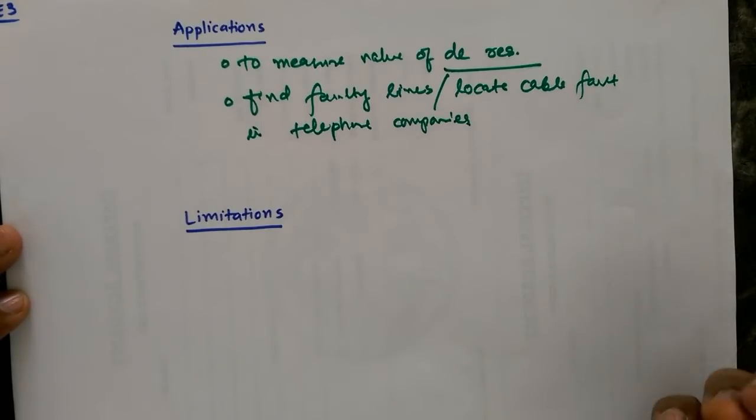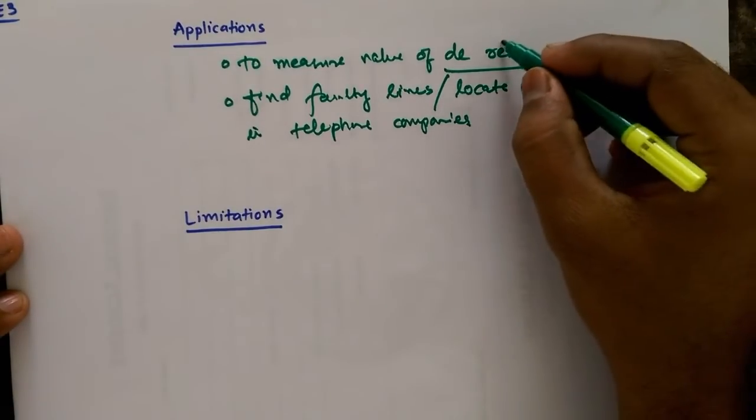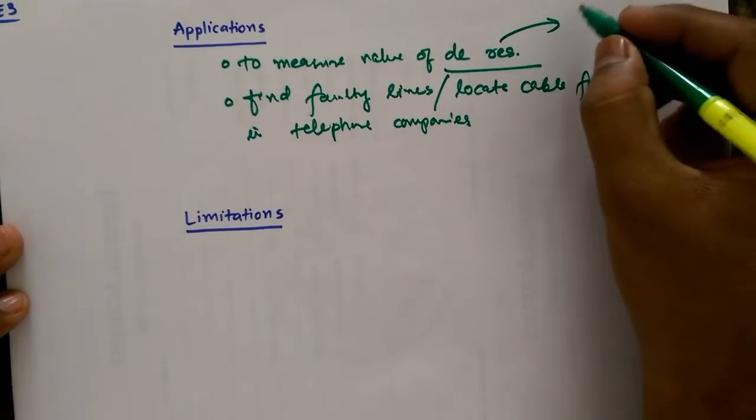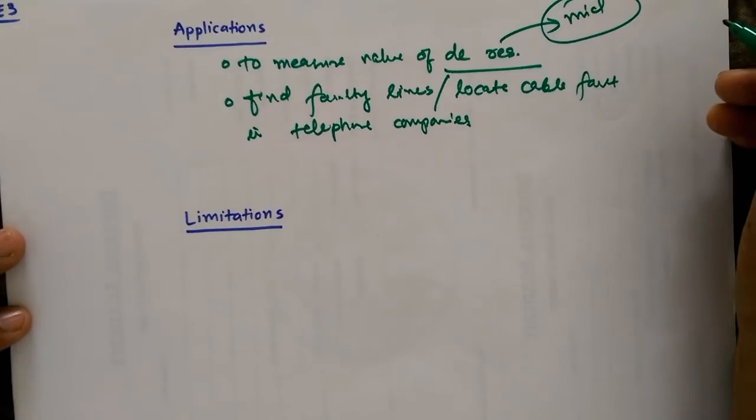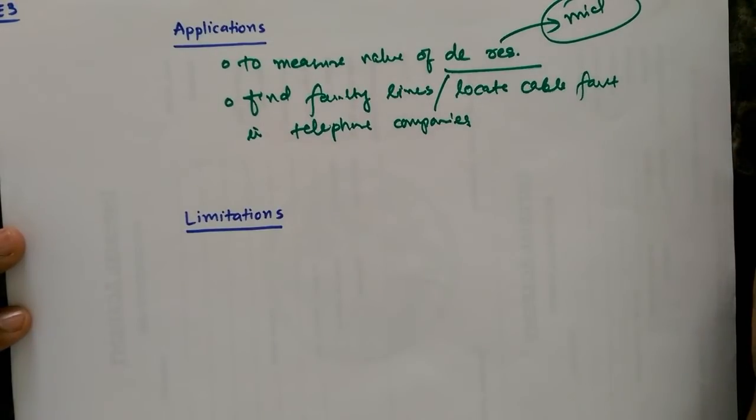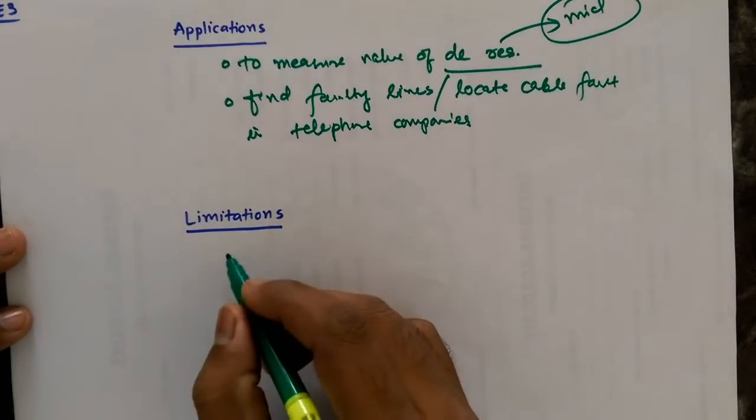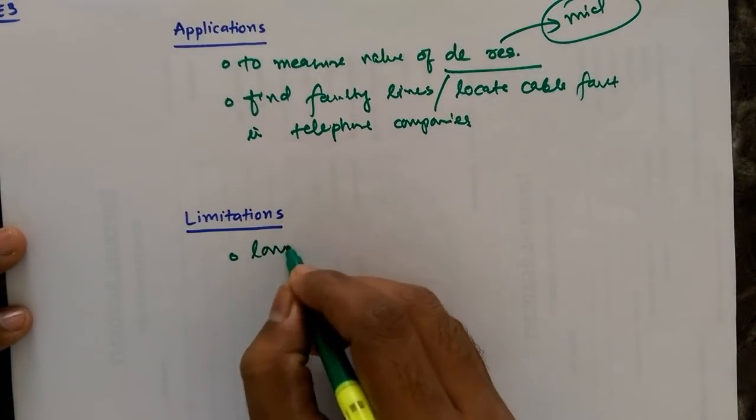So now DC resistance, but we cannot measure all the values of DC resistance. In previous video we had seen there are three types of resistances based on its value: low, mid, and high. So using Wheatstone bridge we can just measure the resistances of mid resistances, that means if its value is more than 1 ohm and it is less than the order of 0.1 mega ohm, then and then we can measure it using Wheatstone bridge.